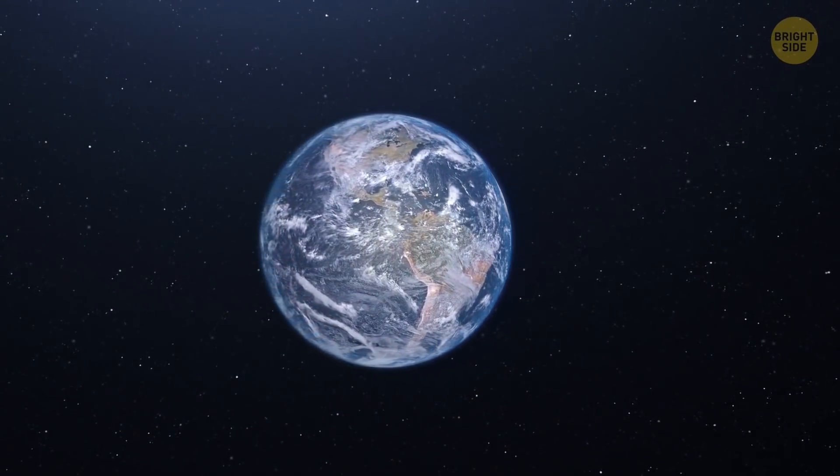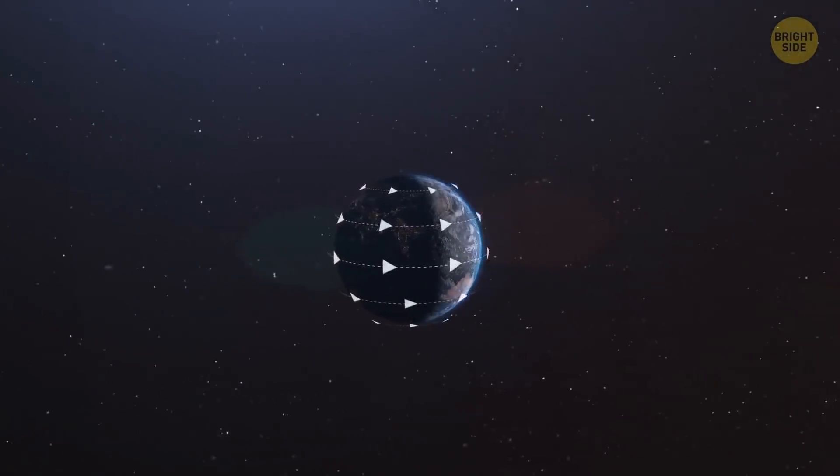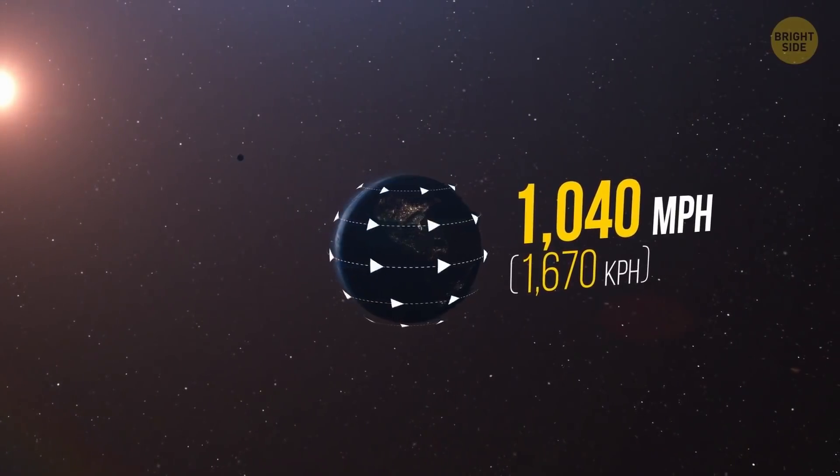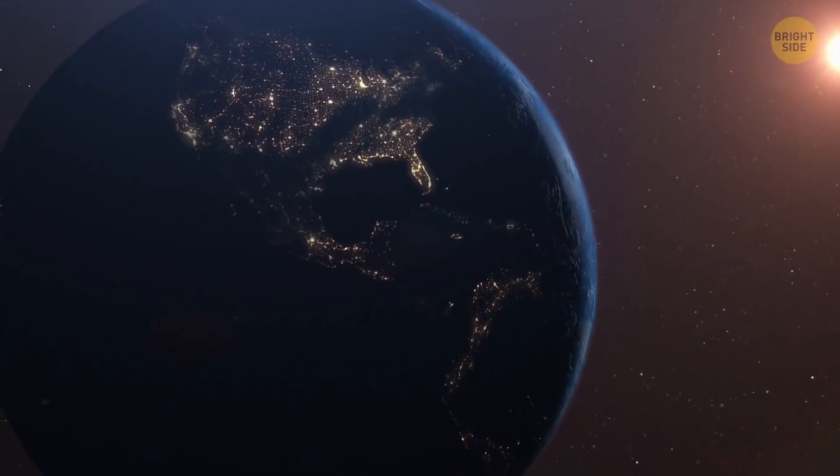Hey, let's play some What If, shall we? Our planet rotates around its axis from west to east at a speed of over a thousand miles per hour at the equator. And this pattern has lasted for billions of years since the Earth was formed.